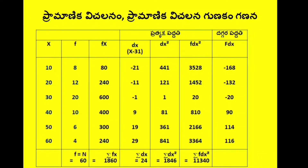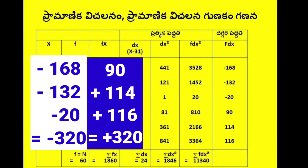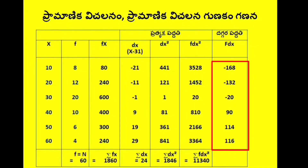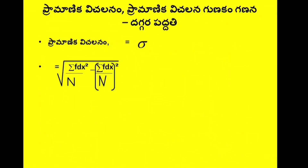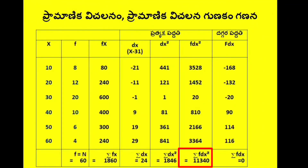So if sigma fdx is equal to 0, the formula simplifies. Sigma fdx² equals 11,340, sigma fdx equals 0, and n equals 60. We have root of 11,340 by 60 minus 0 by 60, whole square. Since 0 divided by anything is 0, and 0 squared is 0.